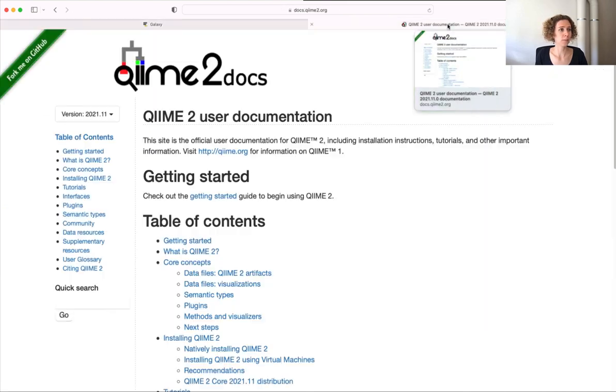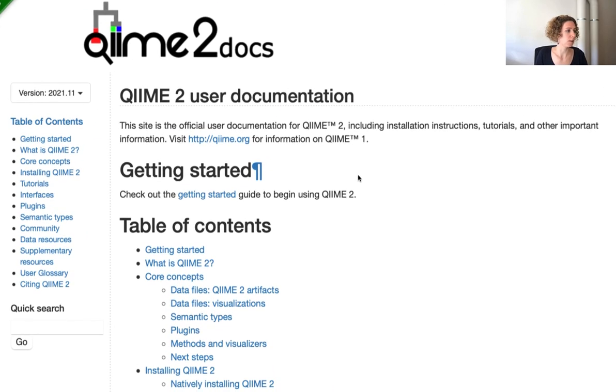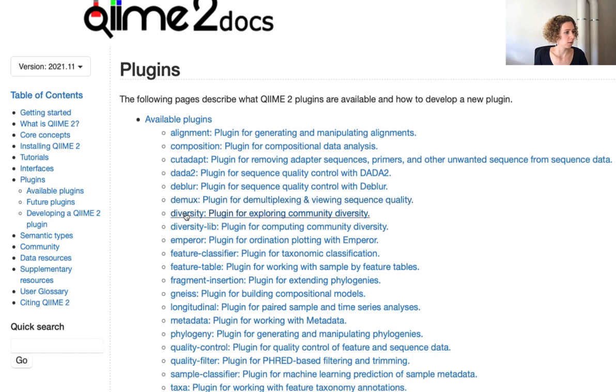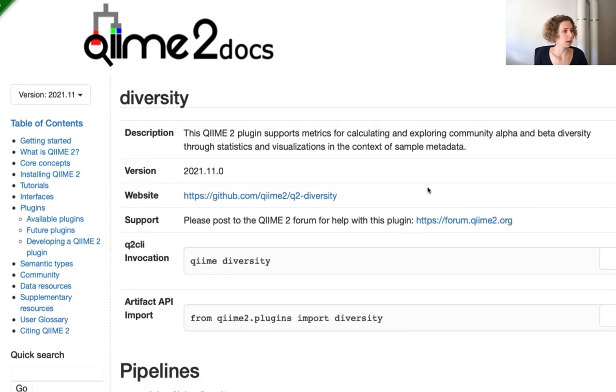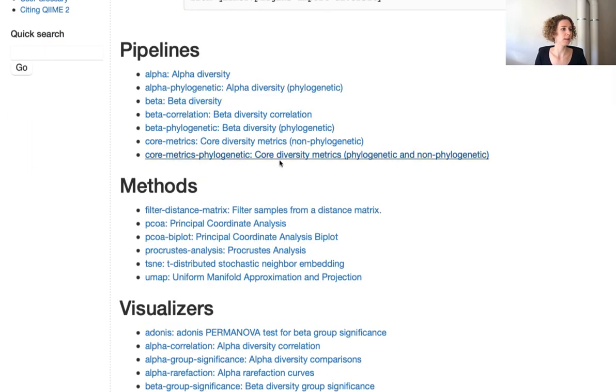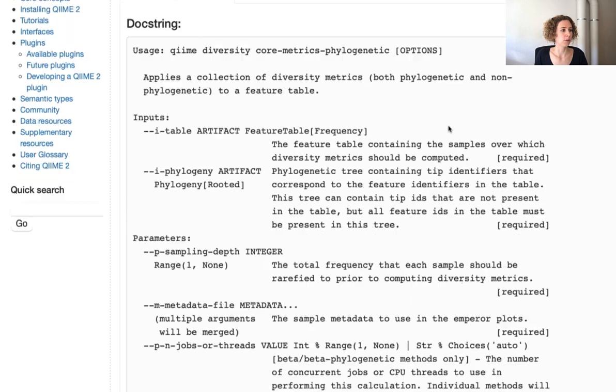One last word. If you want to learn more, you can always have a look at the QIIME2 documentation. So for example, on this website, just click on plugins. And then we can pick the diversity plugin. And you can immediately see here the pipelines that are available. So we use the core metrics phylogenetic pipeline. And you can learn, for example,